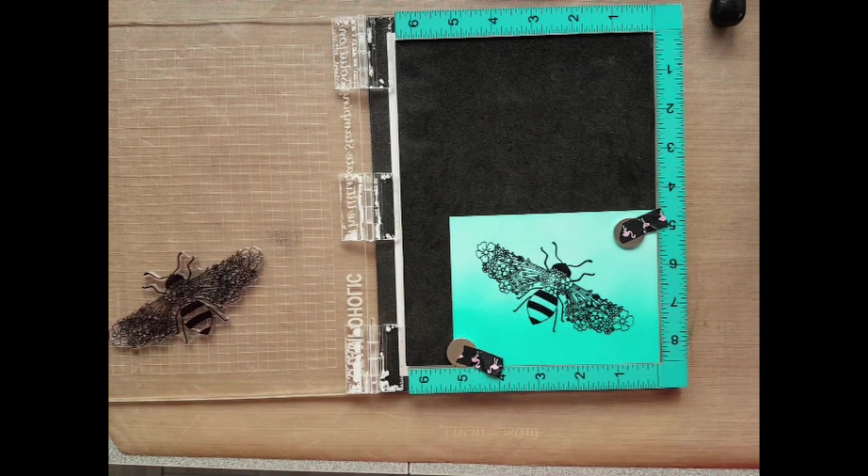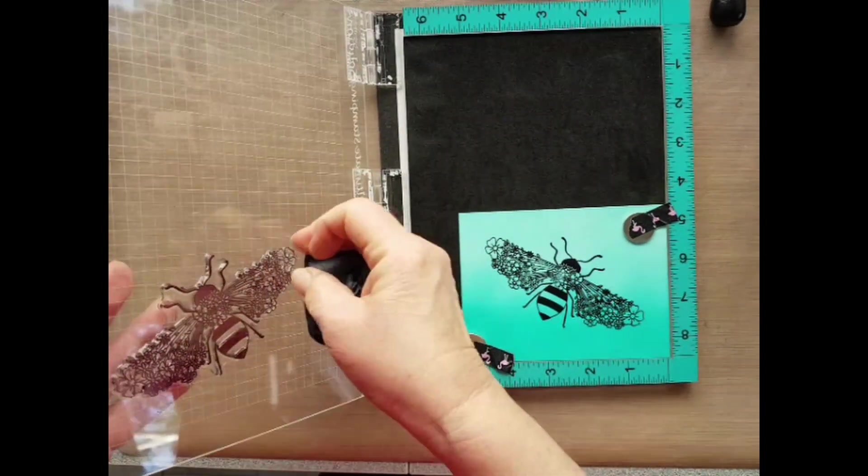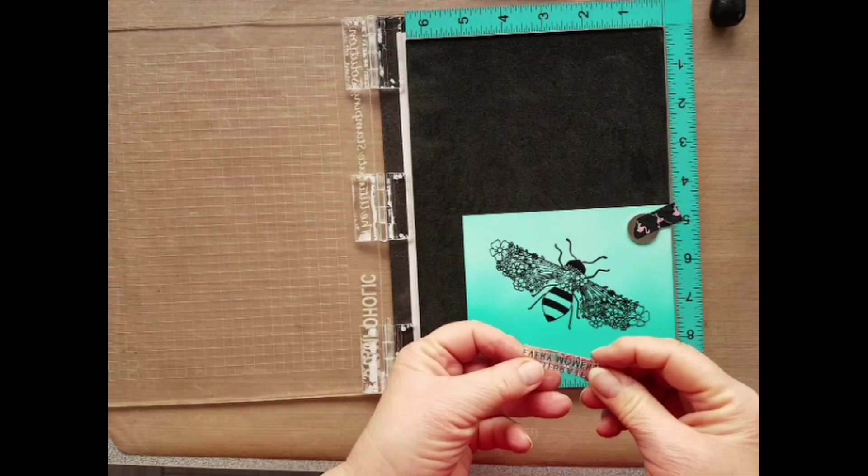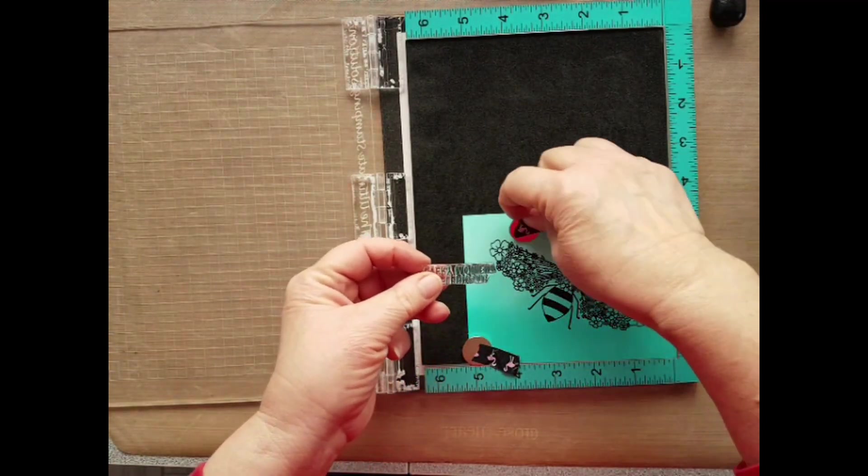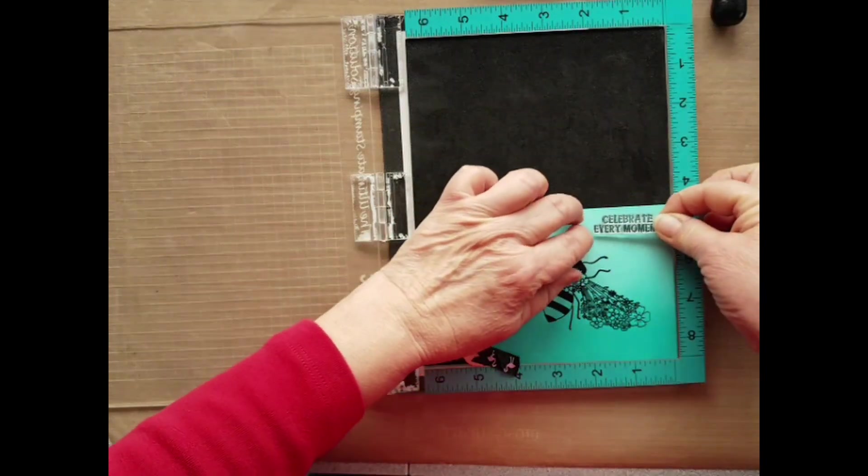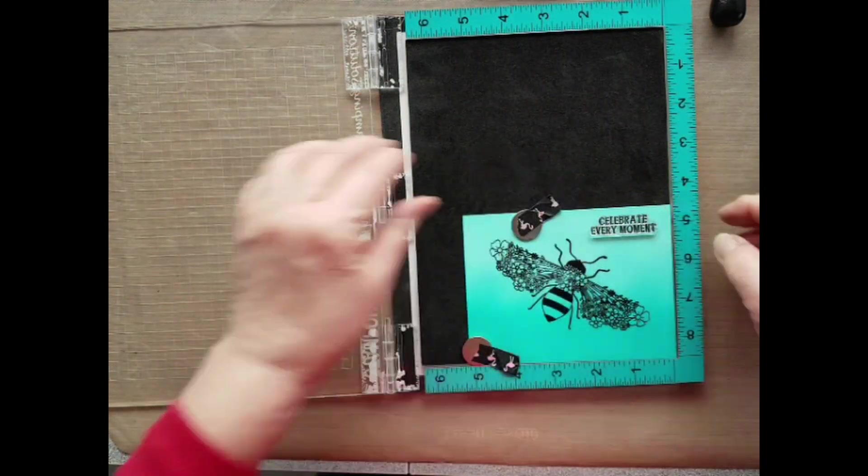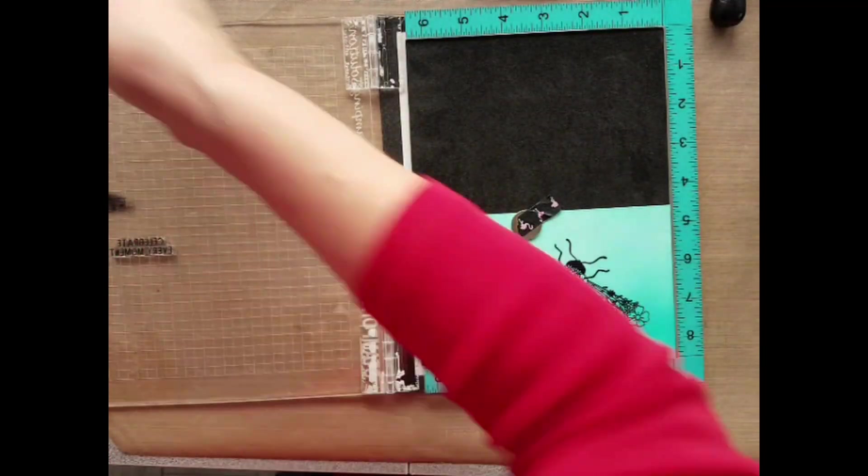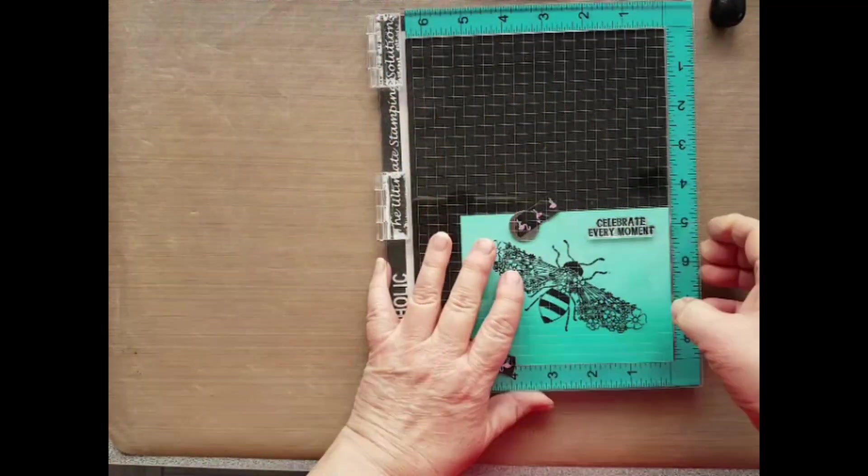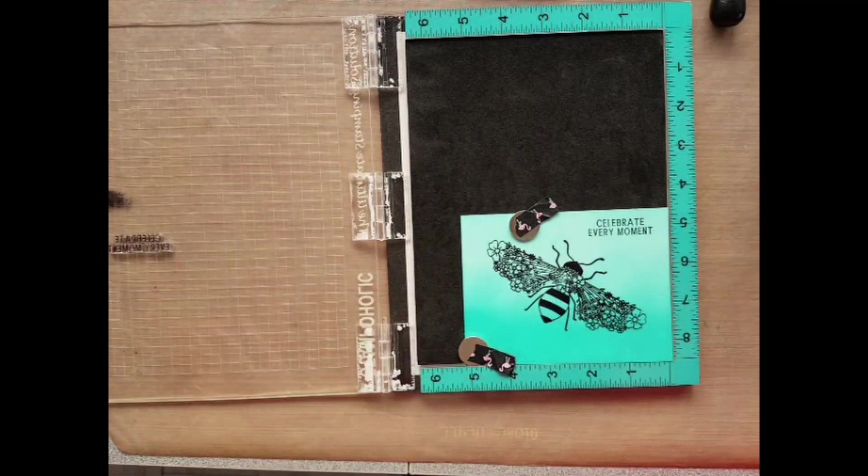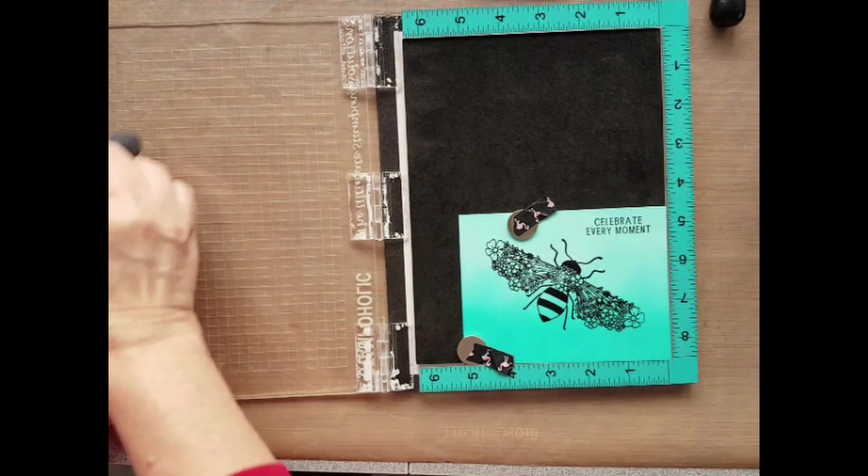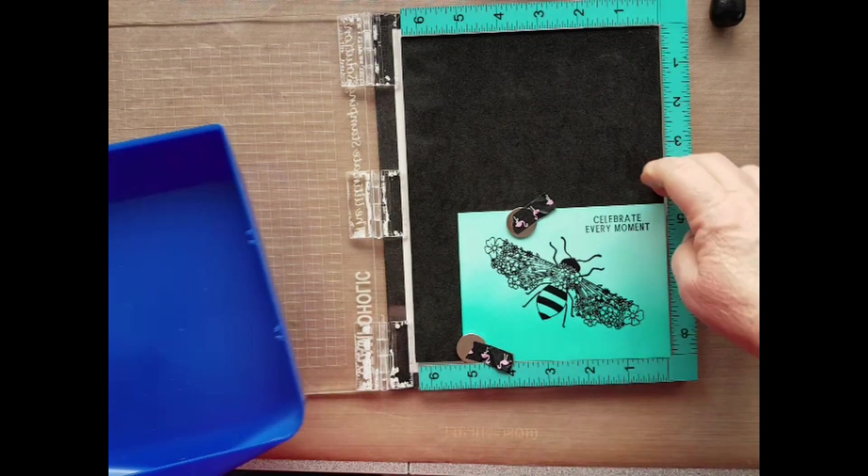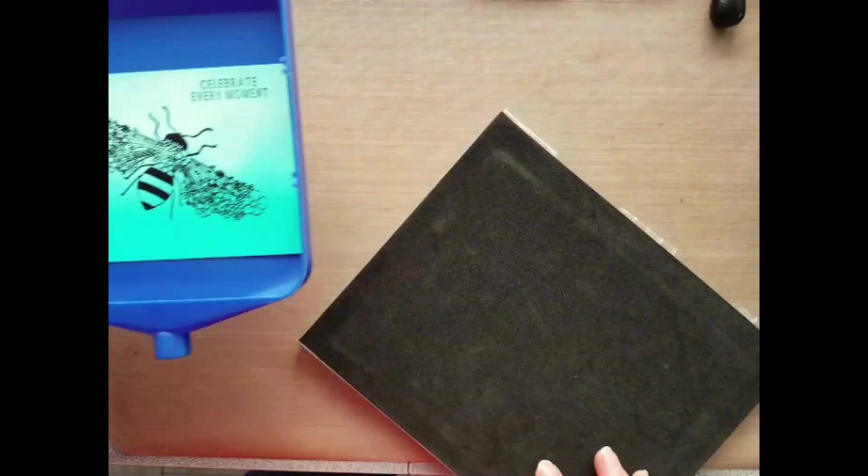Now we're going to add a sentiment - Celebrate Every Moment is what I'm going to use. I will put this in the stamping platform too. Using archival ink enables us to heat emboss with clear embossing powder, and this will give a nice shiny stamped image.